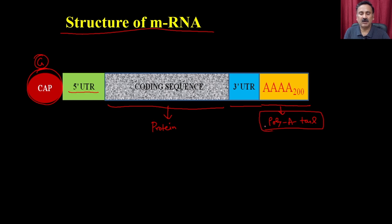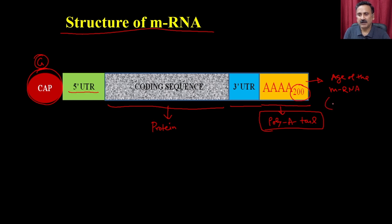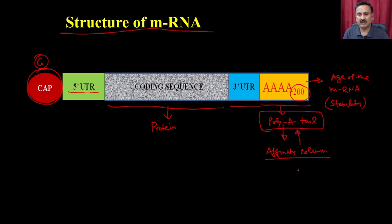After the 3' UTR, a classical post-translational modification adds the poly-A tail. This poly-A tail is present on all messenger RNAs, though the length can vary — some may have 200 adenine residues, some 50. The number of A's on the 3' end decides the stability or durability of the messenger RNA in the cytosol. This region can be used to identify and purify the messenger RNA using an affinity column with high affinity for the poly-A tail.